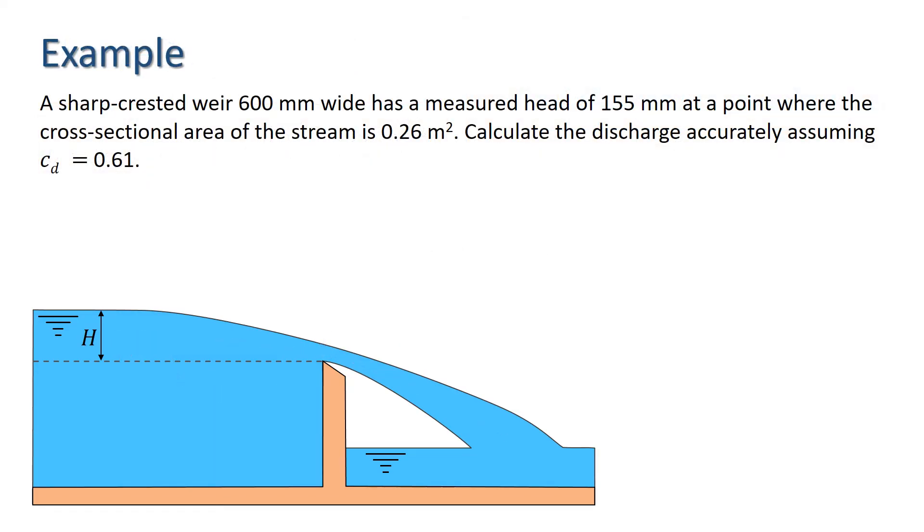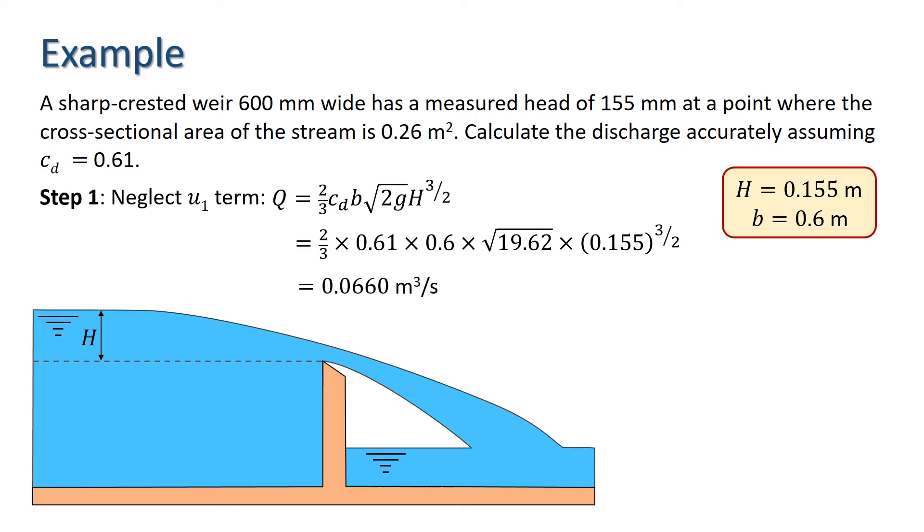Let's look at an example. Here, we know the width of the weir, and we have a measurement for the head at a point upstream. However, we don't know the upstream velocity, so we employ an iterative method in which we first use the simplified equation, i.e. we neglect U1, and then we use the calculated discharge to estimate the upstream velocity. So, calculating Q first, we have Q equals 2 thirds CD B root 2G times H to the power of 3 over 2, giving us 0.066 meters cubed per second.